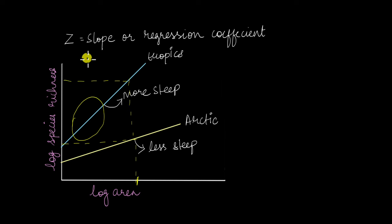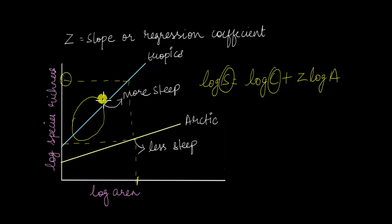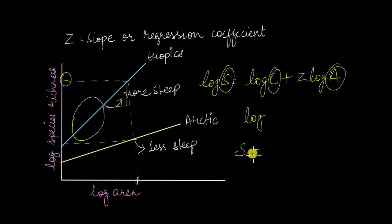To summarize the species-area relationship: the equation is log S = log C + z·log A, where S is species richness, C is the y-intercept, z is the slope of the line, and A is the area. In the arithmetic scale, the equation is S = CA^z.